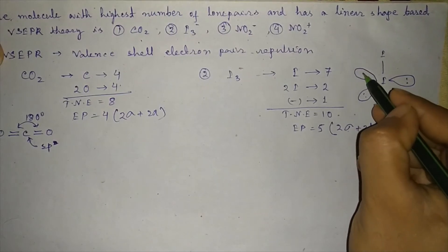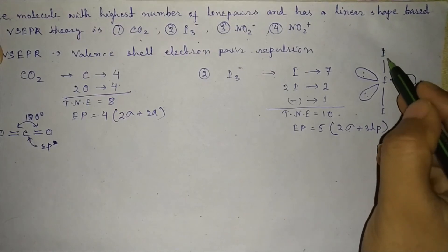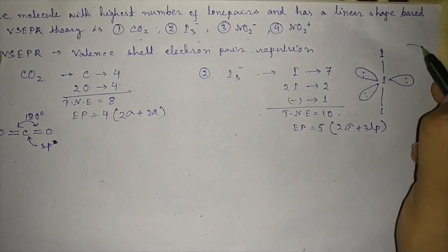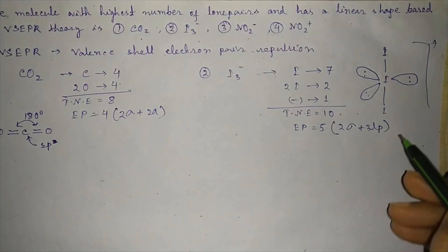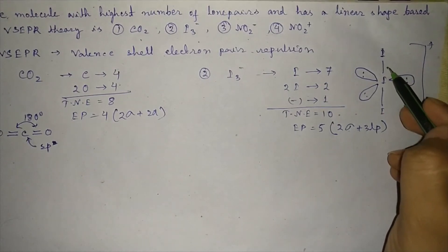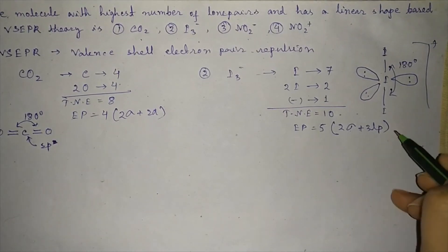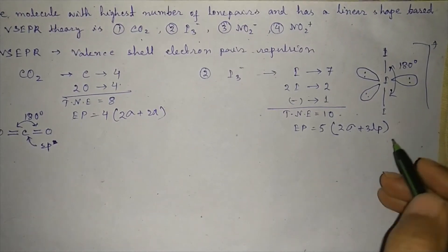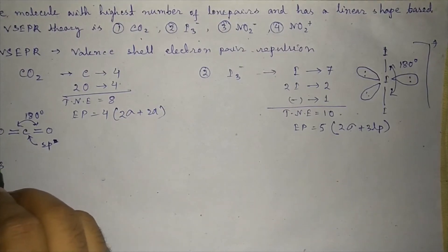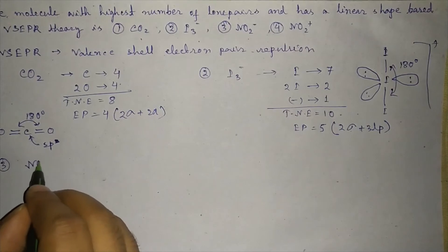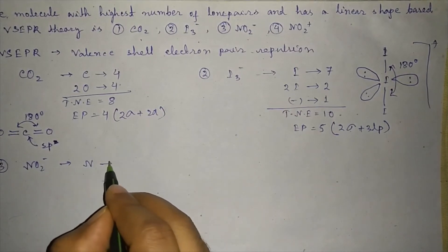The three lone pairs occupy the equatorial positions and the two iodines occupy the axial positions, giving a bond angle of 180°. So I₃⁻ is also linear.